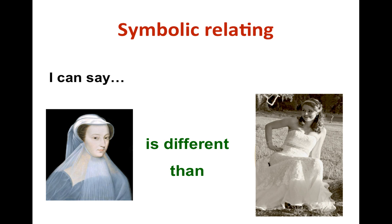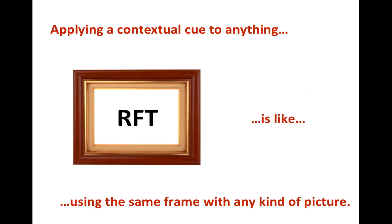So while the two white dresses actually have more in common than the black and white mourning dresses, these two white dresses are different at a symbolic level. Once again, the contextual cue is applied independently of the intrinsic characteristics. So when relating is done independently of the intrinsic characteristics of the things being related, we can call that symbolic relating. This is where the metaphor of the frame comes from and why we call language framing in RFT — a contextual cue can be applied to anything, like a frame can contain any kind of picture.